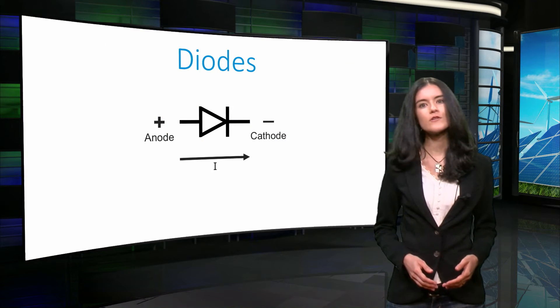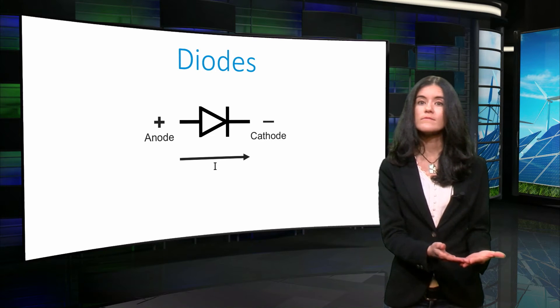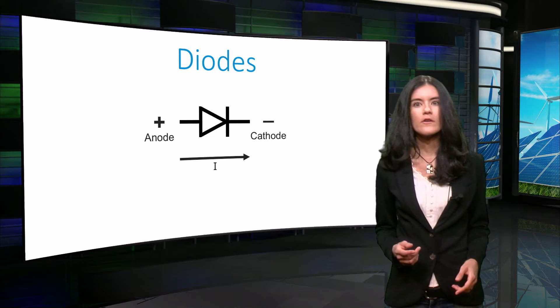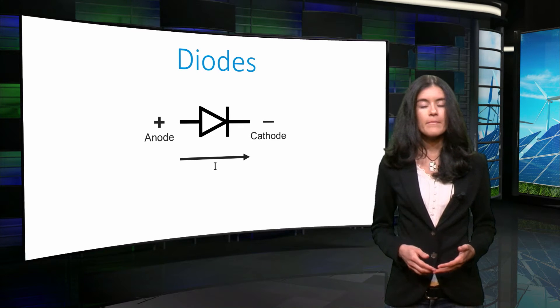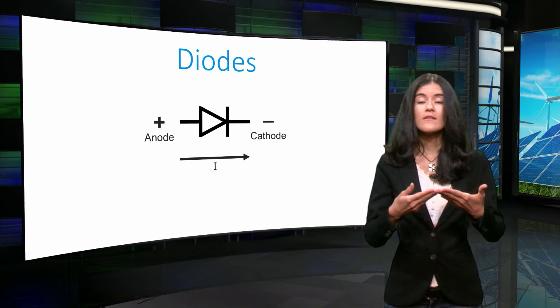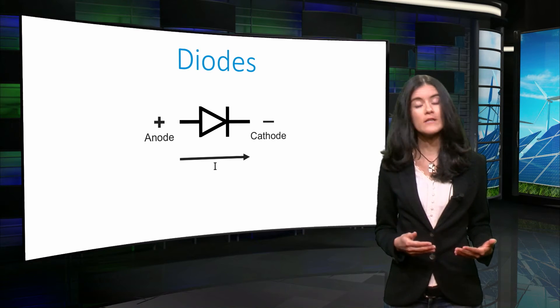A diode is a semiconductor device that allows a current to flow in one direction only, from the anode to the cathode. In the figure, you can see the representation of an ideal diode. When the voltage at the input side is higher than the voltage at the output side, a current will flow in the direction of the output.